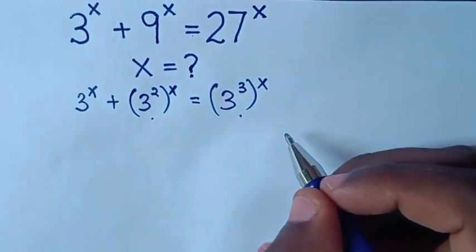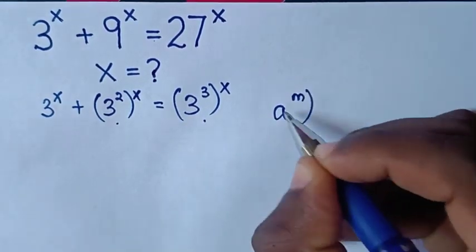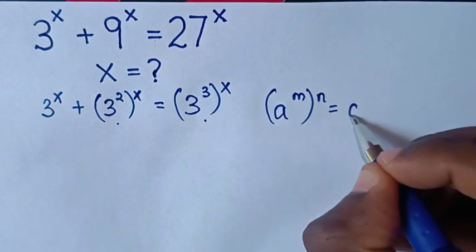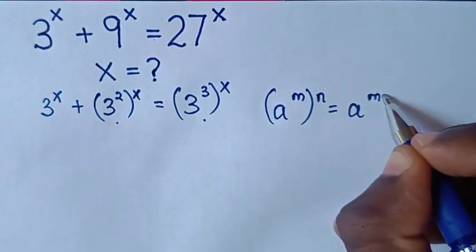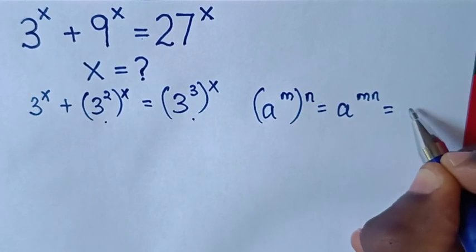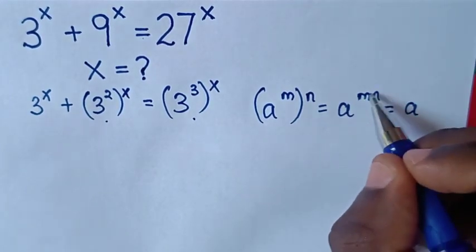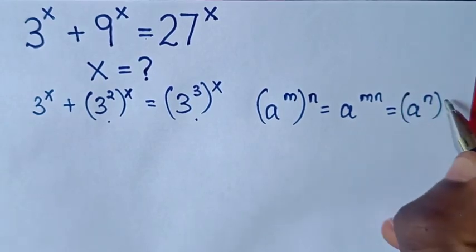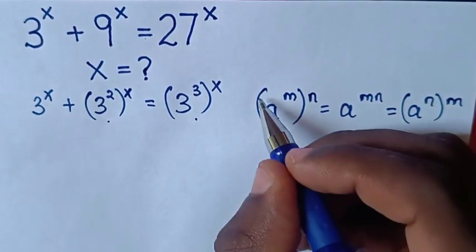We will apply the exponential rule: a power m, bracket power n, is equal to a power of m times n — that is, we multiply the powers n inside the bracket and m outside the bracket.